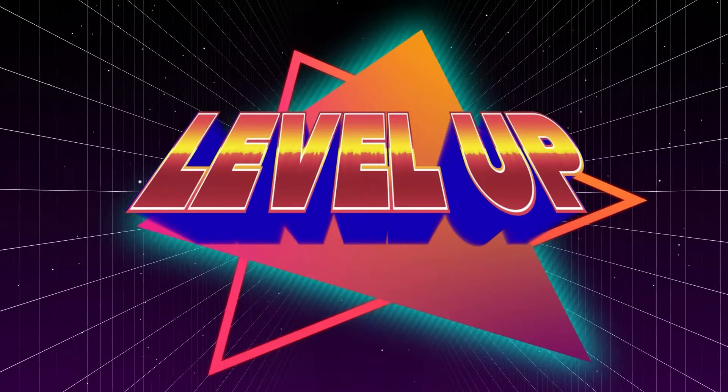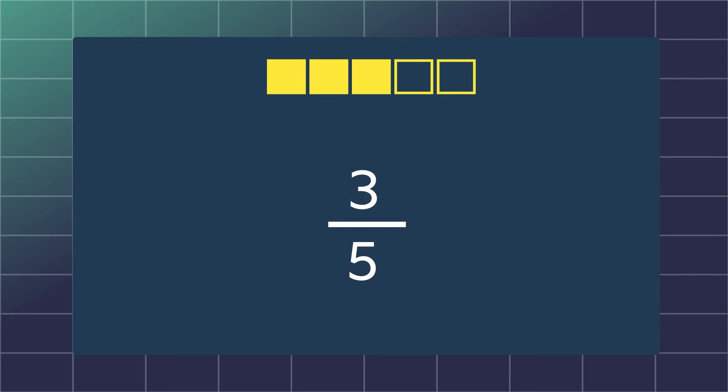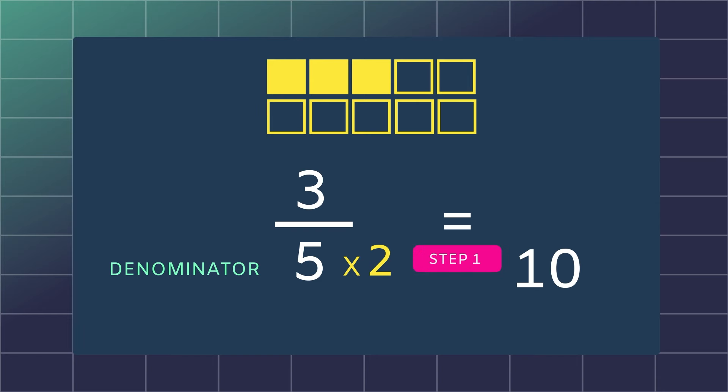Let's move up a level and try the fraction three fifths. Writing that in decimal notation is a little harder. The trick is to change the bottom number, the denominator, into a base 10. We will multiply the 5 by 2 and now our denominator will be 10.